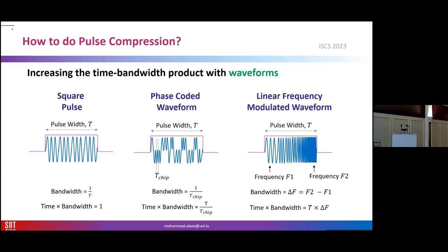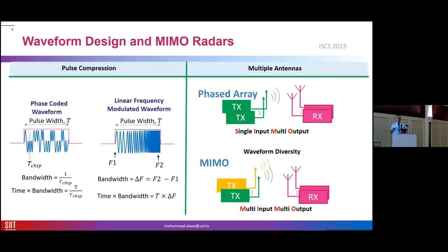As soon as we use some modulation inside the pulse — whether in the phase or frequency — the time-bandwidth product will increase. For phase modulation, the bandwidth is related to the amount of phase change during that time. This time-bandwidth product greater than one produces some gain for detection. Pulse compression is something almost all radars already have, but this is not the case for weather radars because there we have a big challenge.